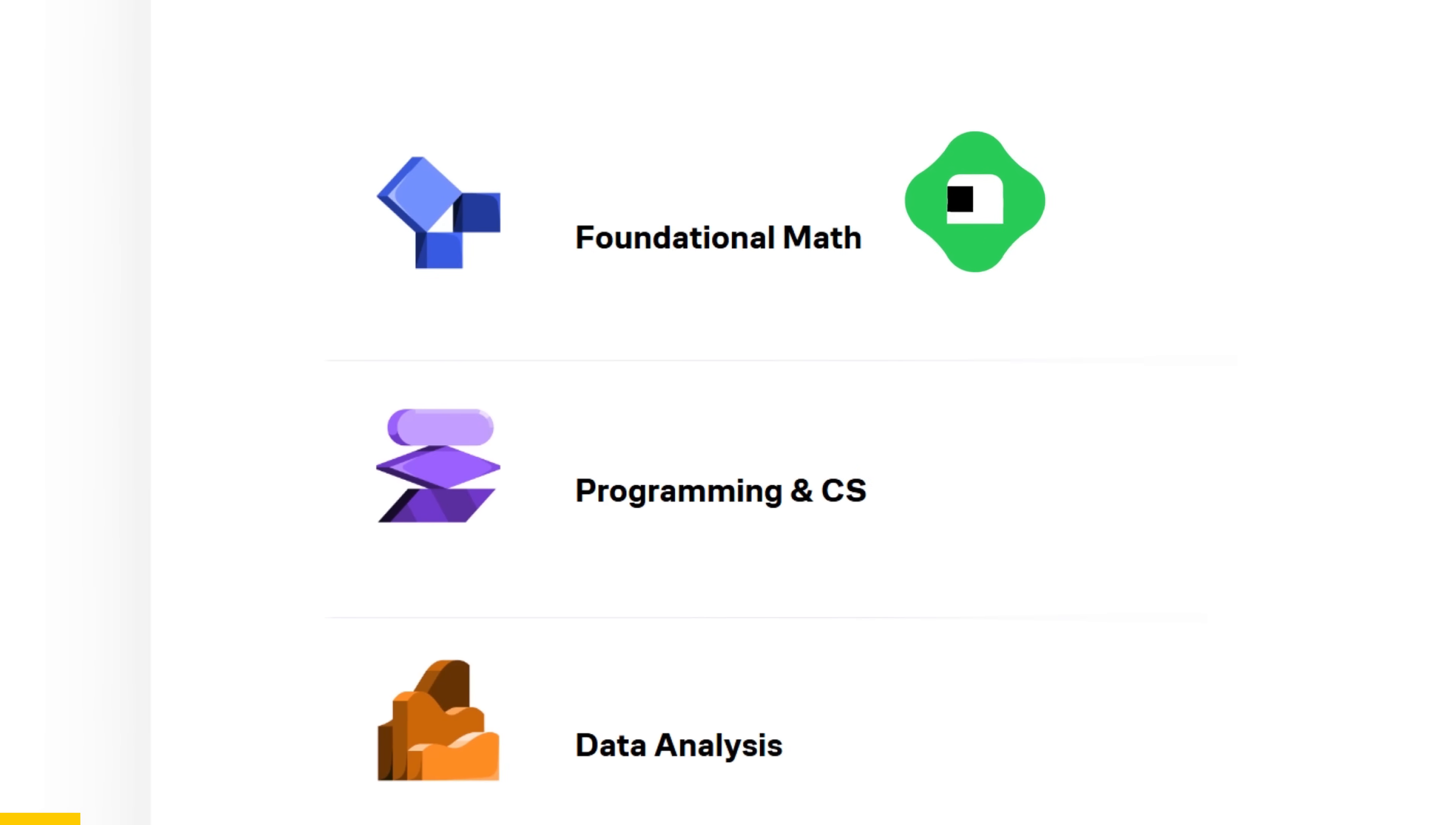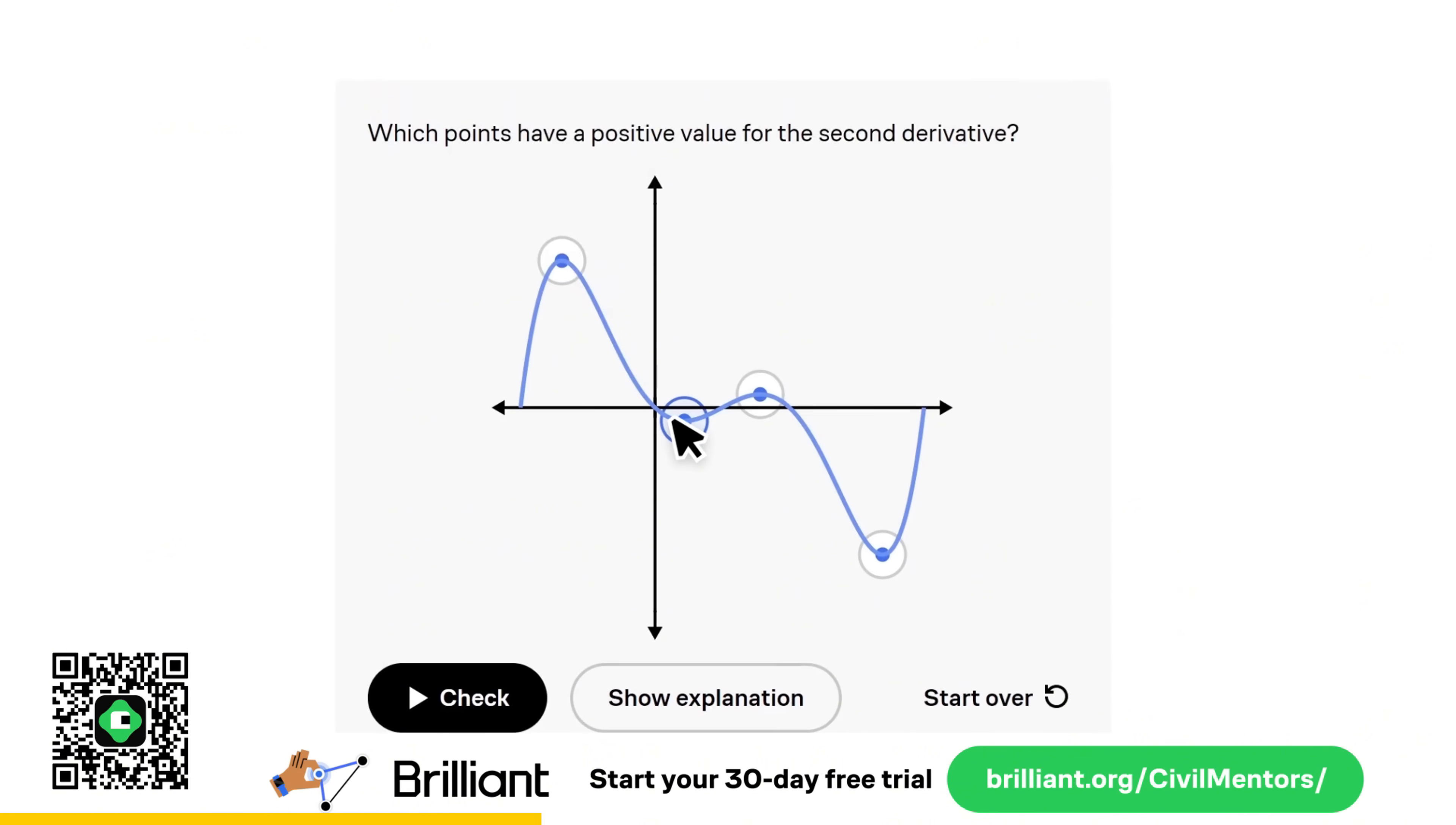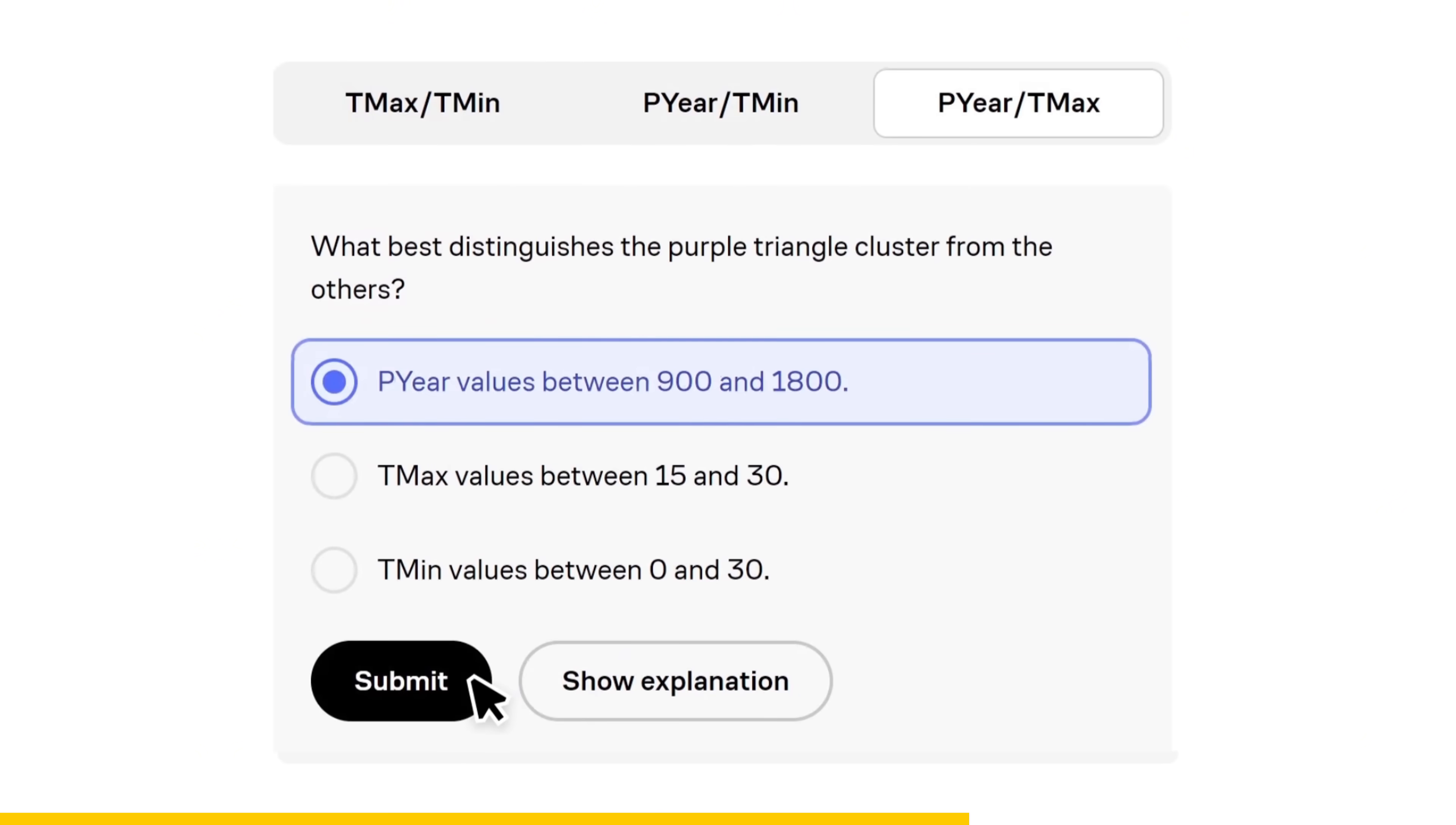Brilliant is an interactive learning app that helps you master everything from physics and math to computer science and data analysis. It's perfect if you're curious about the kind of problem solving that makes breakthroughs like fusion possible. What I really like about Brilliant is that it teaches you by doing. You're not just watching a lecture, you're solving problems, testing ideas, and building a real understanding from the ground up.